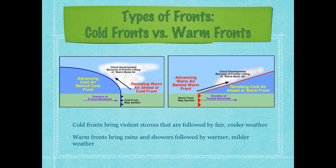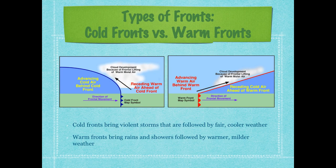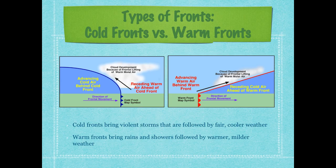Warm fronts bring rains and showers followed by warmer, milder weather. They're shown by red half-circles on a weather map. As the front moves through it can bring rain and showers, but then you'll have that warm air mass over your location — whether it's Dallas or wherever you are — and that's when you'll have warmer, milder weather after the front of the air mass moves through.